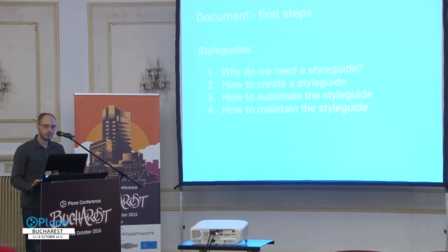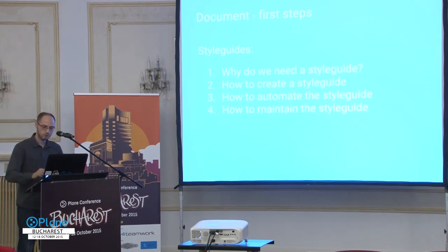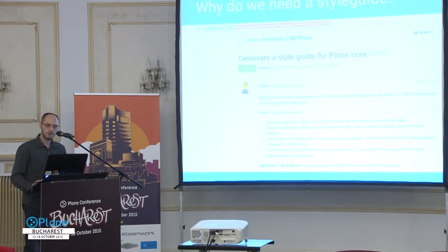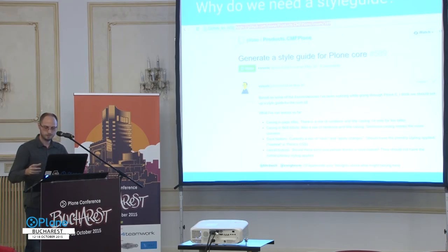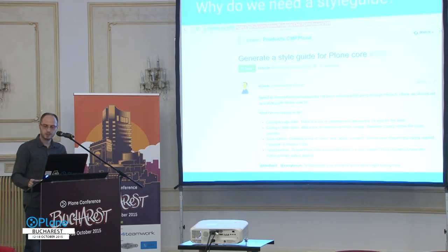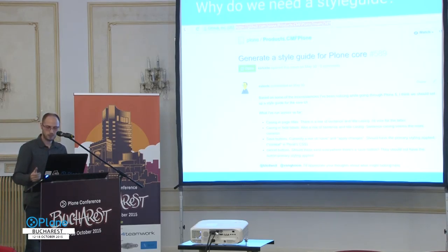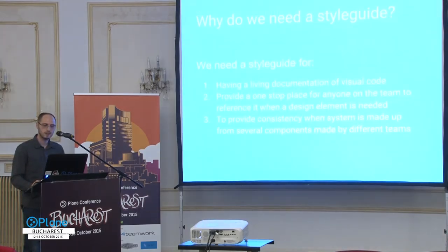Now we move to our third step: document our theme. For documenting, I thought of style guides. Why do we need a style guide? How might we create one or automate it? And if we automate, we need to maintain it. Eric Steele added an issue noting that we need a style guide for Plone Core — there are various inconsistencies and we need to document and have one way of presenting all components. A style guide can be very broad: strictly about how you write CSS, or about all the visual elements on the site.